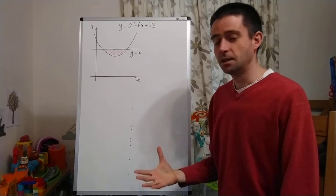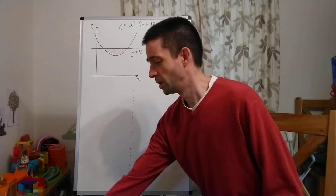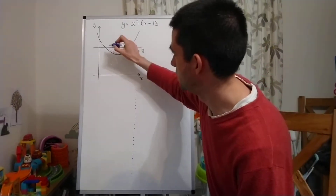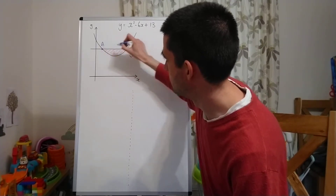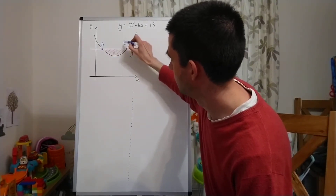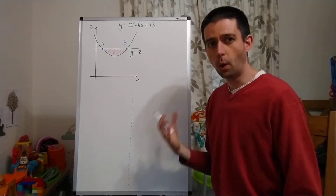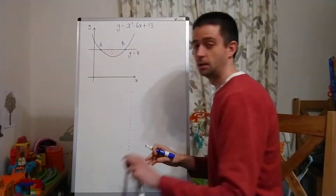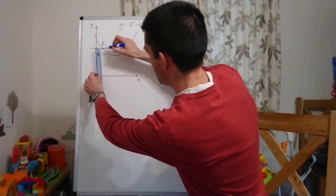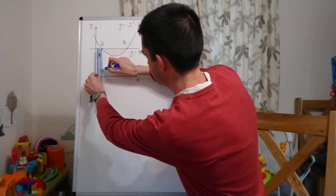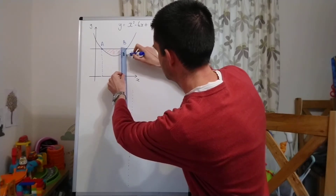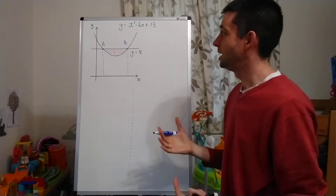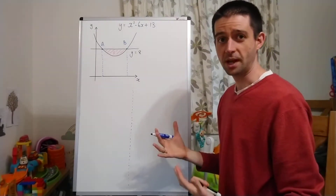The first thing that you need to do with questions like this — often this is done for you — is to label any points of intersection between the curve and the line. There are two here. I'm going to label them A and B. Whenever you have points of intersection between a line and a curve and you're trying to find an area, my recommendation is that you draw a vertical line straight down to the x-axis from those points, and that will give you an indication of what we have to do to solve the problem.